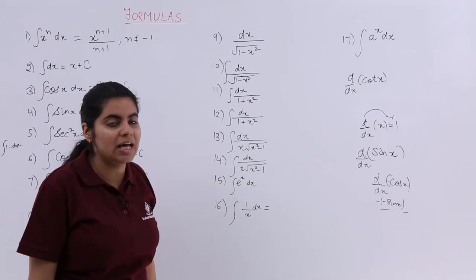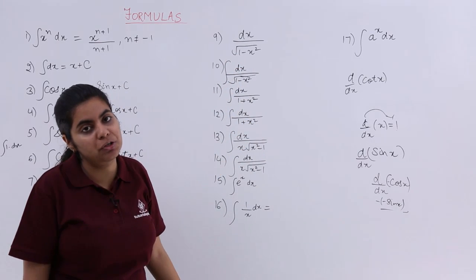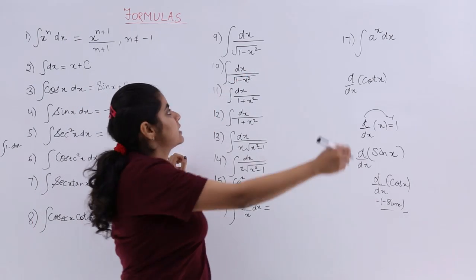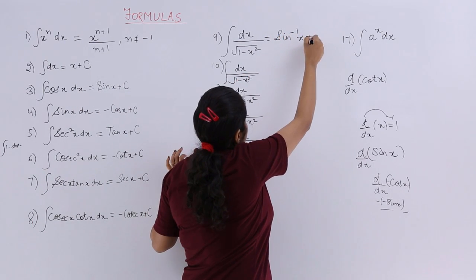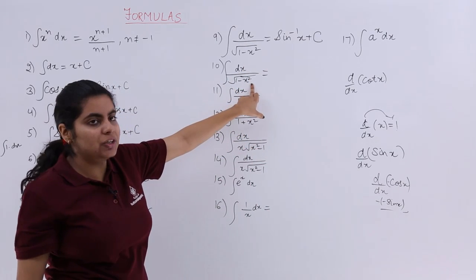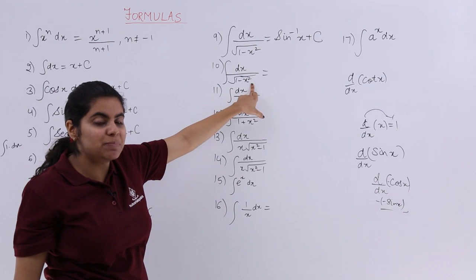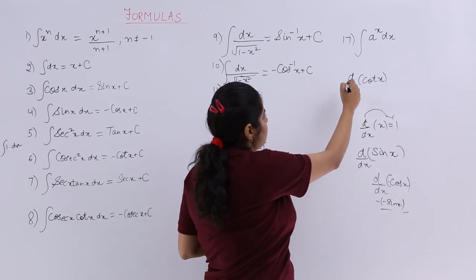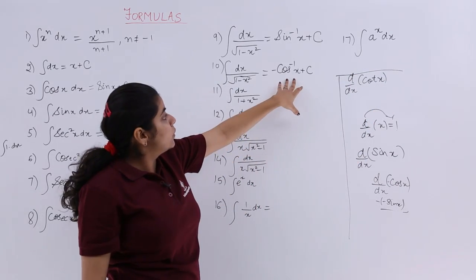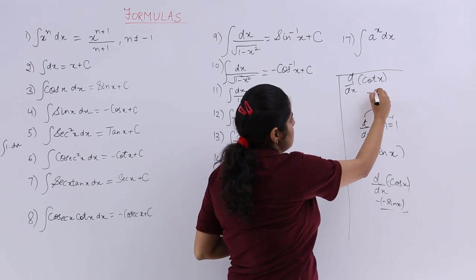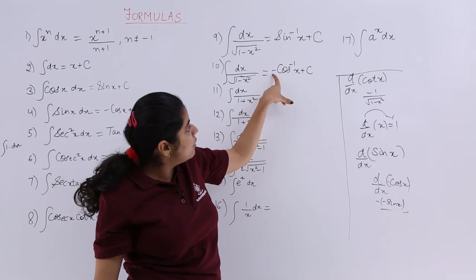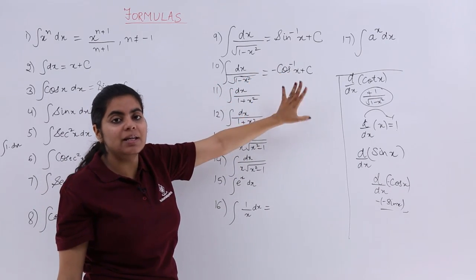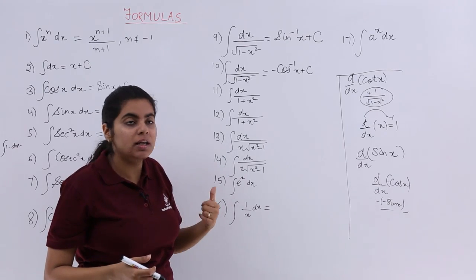Moving to the second column, these are all results of inverse trigonometric function differentiation. What on differentiation will give me 1 upon under root 1 minus x²? It will be sine inverse x, so integration equals sine inverse x plus c. Also, we can write it as minus cos inverse x plus c, because the differentiation of cos inverse x is minus 1 upon under root 1 minus x², and minus times minus gives plus — so both sine inverse x plus c and minus cos inverse x plus c give the same result.